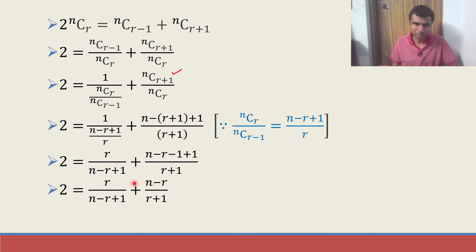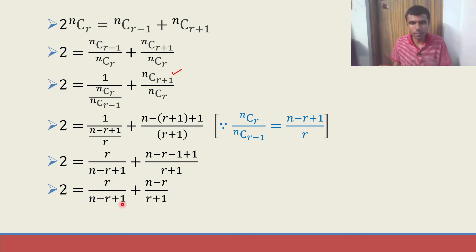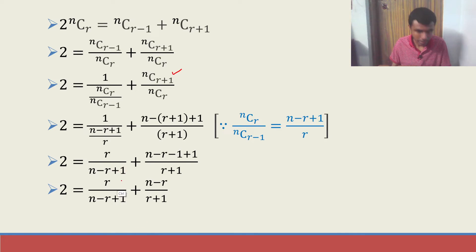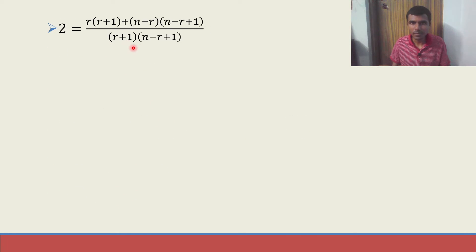Quick recap: 2 = r/(n−r+1) + (n−r)/(r+1). Taking LCM, the numerator becomes r·(r+1) + (n−r)·(n−r+1) and the denominator is (r+1)·(n−r+1).